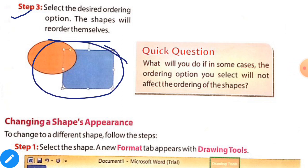Step 3. Select the desired ordering option. The shapes will reorder themselves. Like this. Now your yellow shape will be on front.